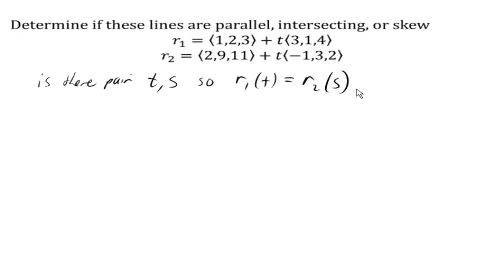So what we're going to do is we're going to set the components equal. So looking at the x components in the first equation, we'd have 1 plus 3t. In the second line, again, we're using s as the input now, 2 minus 1s as the x component. So we're wondering, is there a pair of t and s that'll make this true?